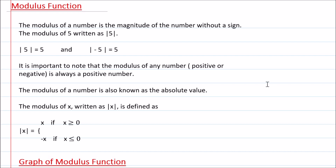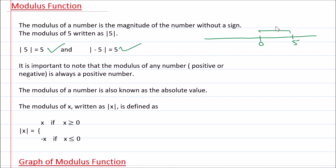What is a Modulus Function actually? If we talk about Modulus of a number, it is the magnitude of the number without a sign. Modulus of 5, written as Mod of 5. Mod of 5 is equal to 5 and Mod of minus 5 is also 5. Mod of 5 means from 0, what is the distance of 5 on the number line? As we know, this is 5 units. So Mod of 5 is 5.